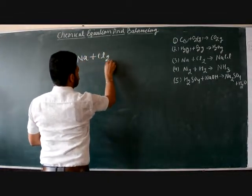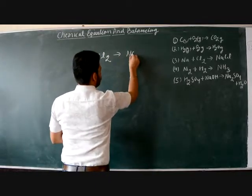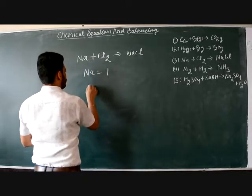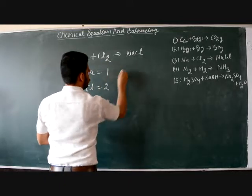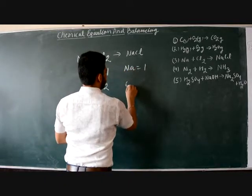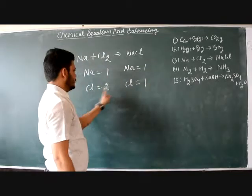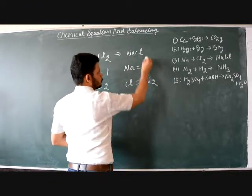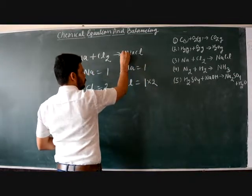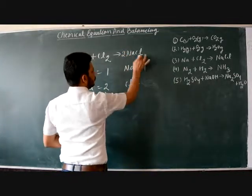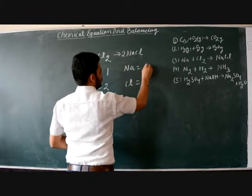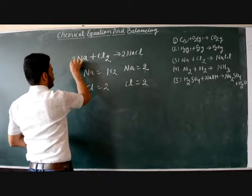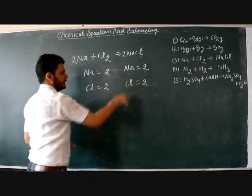Next example: Na + Cl₂ → NaCl. Count atoms: Na = 1, Cl = 2 on the left; Na = 1, Cl = 1 on the right. Chlorine is unbalanced. Multiply NaCl by 2 — always write the coefficient in front. Now Cl = 2 on both sides, but Na on the right has become 2. So multiply Na on the left by 2. Now Na = 2 on both sides. The equation is balanced: 2Na + Cl₂ → 2NaCl.